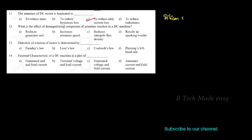Silicon steel laminations are used to reduce losses. We have specified silicon steel lamination. In these two types of lamination, the arguments are used to reduce the hysteresis loss.